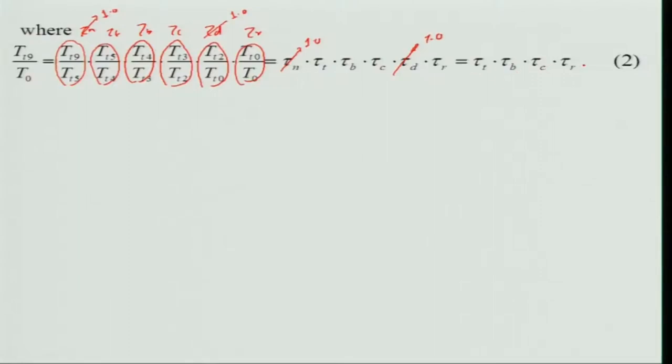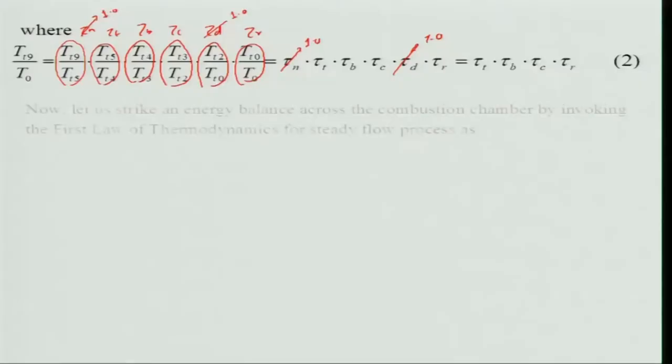Since τ_D = 1 and τ_N = 1, T_t9/T_0 simplifies to τ_T · τ_B · τ_C · τ_R. If one wants to improve accuracy, τ_N and τ_D can be included, but values for them must be known. Generally, this additional detail is not used, but it can be done with careful analysis.